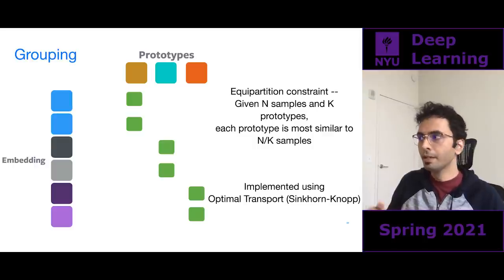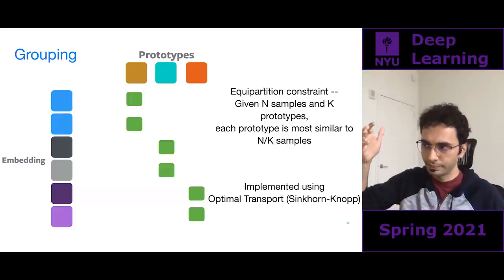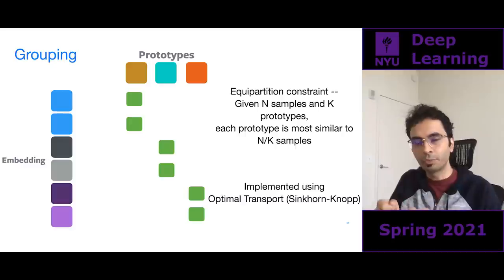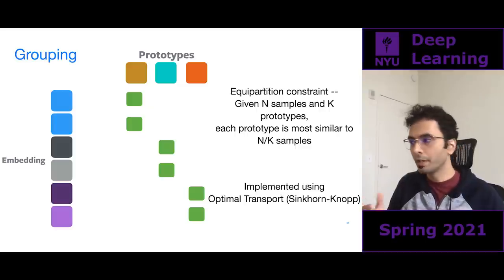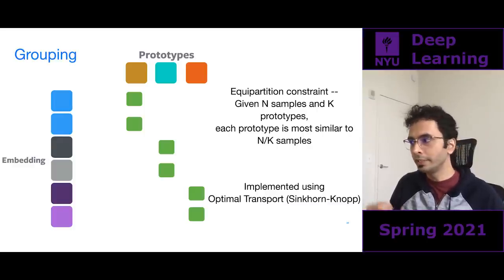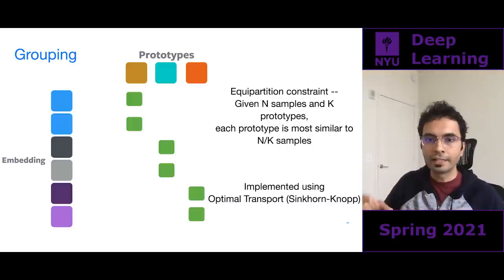Rather than using K-means — which does not have this equipartition constraint — we use Sinkhorn-Knopp, which guarantees that none of the prototypes will be dominant and that clusters will be of uniform size. If I had N samples and K clusters, all clusters will be of size N/K, which K-means does not guarantee. This gives us a good clustering constraint.